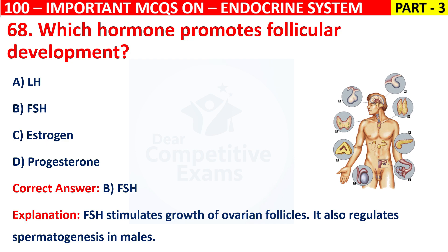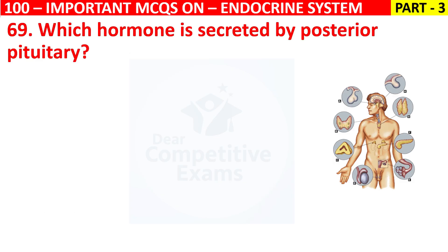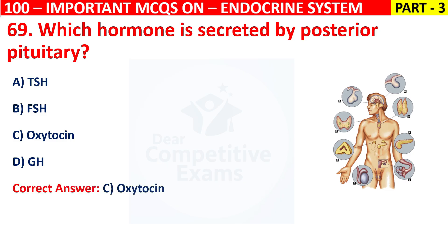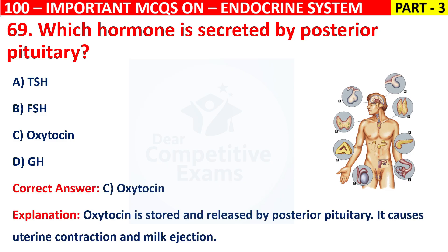Question 69: Which hormone is secreted by the posterior pituitary? Your options are TSH, FSH, Oxytocin, or GH. The correct answer is C, that is Oxytocin. Oxytocin is stored and released by the posterior pituitary. It causes uterine contraction and milk ejection.